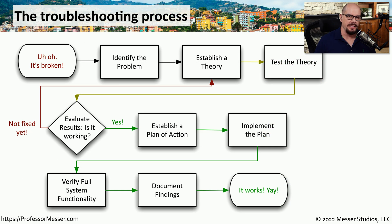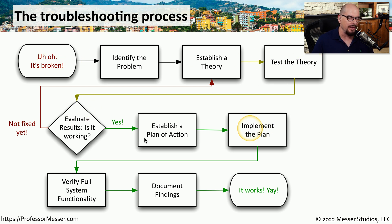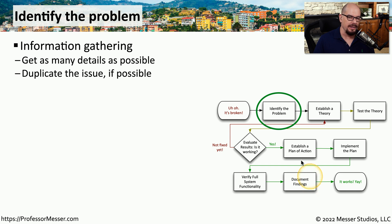Every time we're presented with some type of problem that needs to be solved, there's a standard flow that we can go through to help troubleshoot the issue. This is the troubleshooting process — it starts with a system or application that may be broken and takes us all the way through to where we would fix or resolve whatever issue that might be. The first step is to collect as much information as possible, including screenshots of errors or a list of error messages provided to the user.